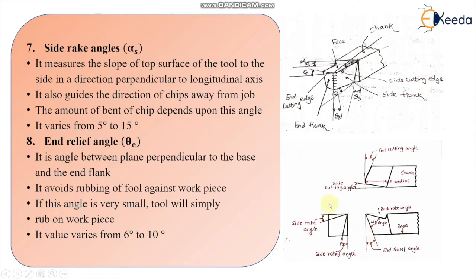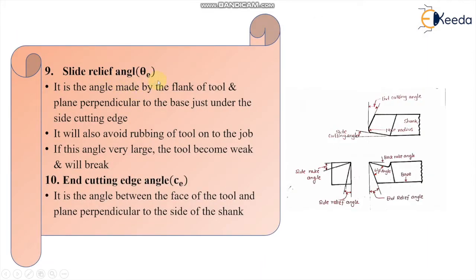After the end relief, we have the side relief angle theta s. You can see it in the side view of the orthographic drawing. The side relief angle is the angle made by the flank of the tool and the plane perpendicular to the base, just under the side cutting edge. This also avoids rubbing of the tool on the workpiece. If these relief angles are too large, the tool becomes weaker and may break.